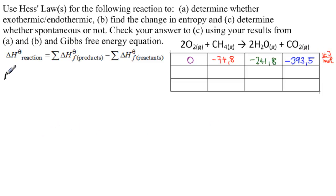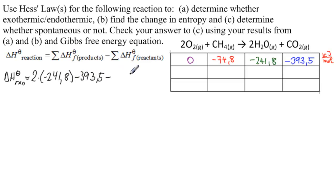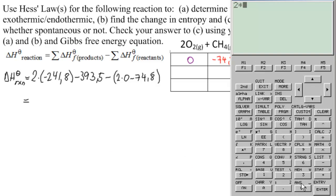So what do we have? ΔH° of the reaction is equal to the sum of the products minus the sum of the reactants. We have 2 moles of H2O, so 2 times minus 241.8, plus minus 393.5, minus the quantity 2 times 0 plus minus 74.8. Calculating: 2 times minus 241.8, minus 393.5, minus the quantity 0 minus 74.8, equals minus 802.3 kilojoules per mole.